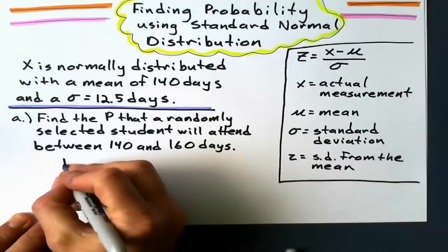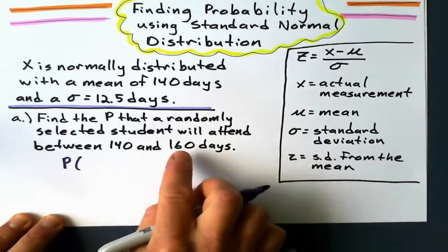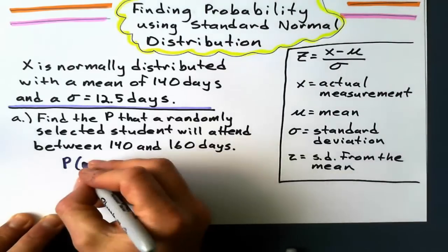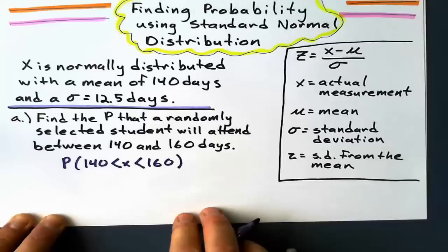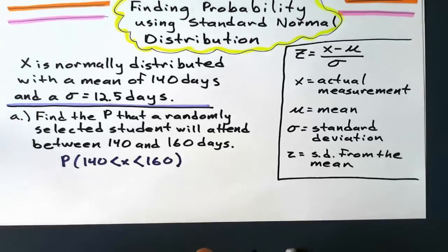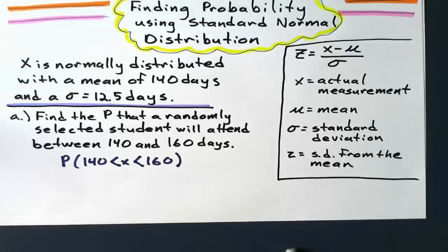Find the probability that a randomly selected student will attend between 140 and 160 days. So this problem has to do with attendance. And all this information here, in probabilities speak, what that means is find the probability that X, our measurement, lies between 140 and 160 days. X, what's the probability that it's between the mean and 160 days?